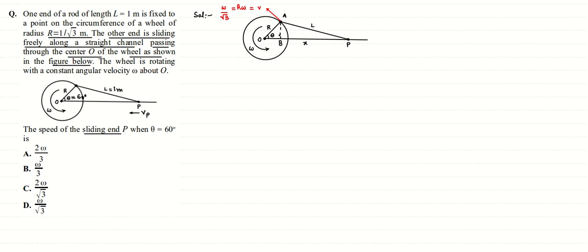From the diagram, the angle at B is 90° and θ = 60°. The perpendicular AB equals R·sinθ = R·sin60° = (1/√3)·(√3/2) = 1/2. So the perpendicular AB = 1/2. We also mark the angle at A between the rod AP and the perpendicular as φ.